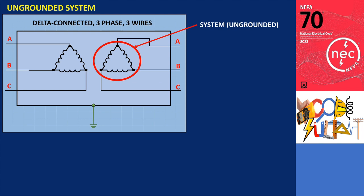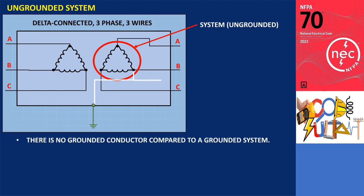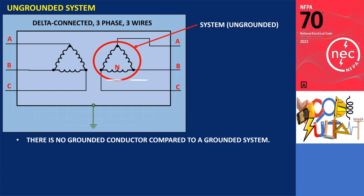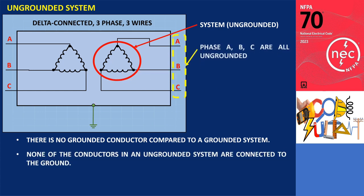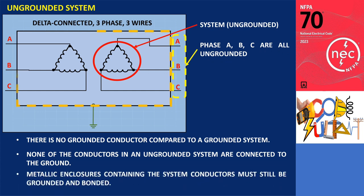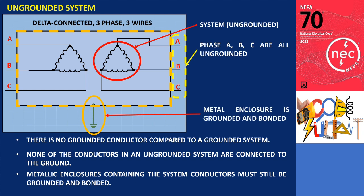In an ungrounded system, there is no grounded conductor compared to a grounded system. In other words, none of the conductors in an ungrounded system are connected to the ground. However, despite the lack of grounding in the system, metallic enclosures containing the system conductors must still be grounded and bonded. This is done to protect against shock hazards and to provide a pathway for over-voltages to flow to the earth.